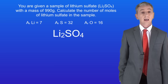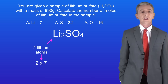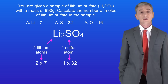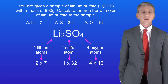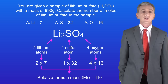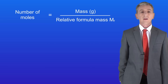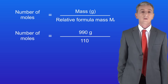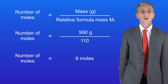We start by calculating the relative formula mass of lithium sulfate. We've got two atoms of lithium with a relative atomic mass of 7, one atom of sulfur with a relative atomic mass of 32, and four atoms of oxygen with a relative atomic mass of 16 each. Adding all of these together gives us a relative formula mass of 110. Dividing 990 grams by 110 means that we have 9 moles of lithium sulfate in our sample.